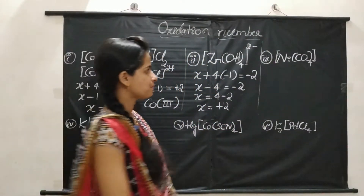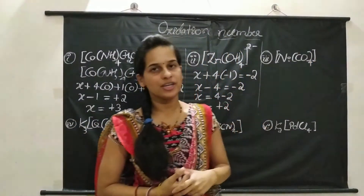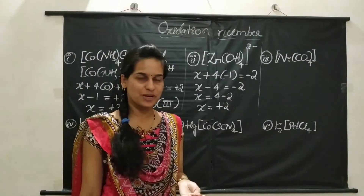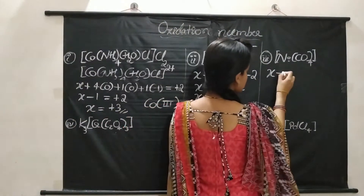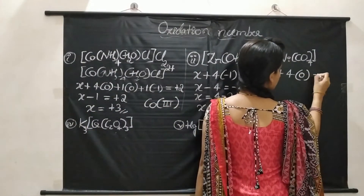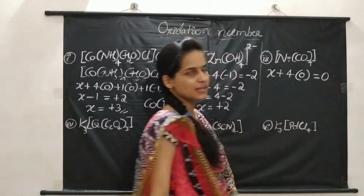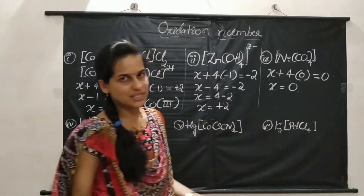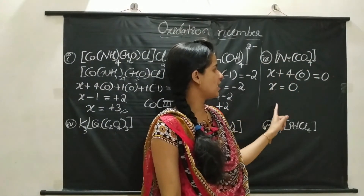The third example is Ni(CO)4. There are no counter ions and no charge on the coordination sphere, meaning the coordination sphere is neutral — charge is 0. The oxidation number of Ni is X, plus 4 CO ligands (neutral, charge 0), equals 0. So X plus 0 equals 0, giving X equal to 0. In Ni(CO)4, the oxidation number of Ni is 0.